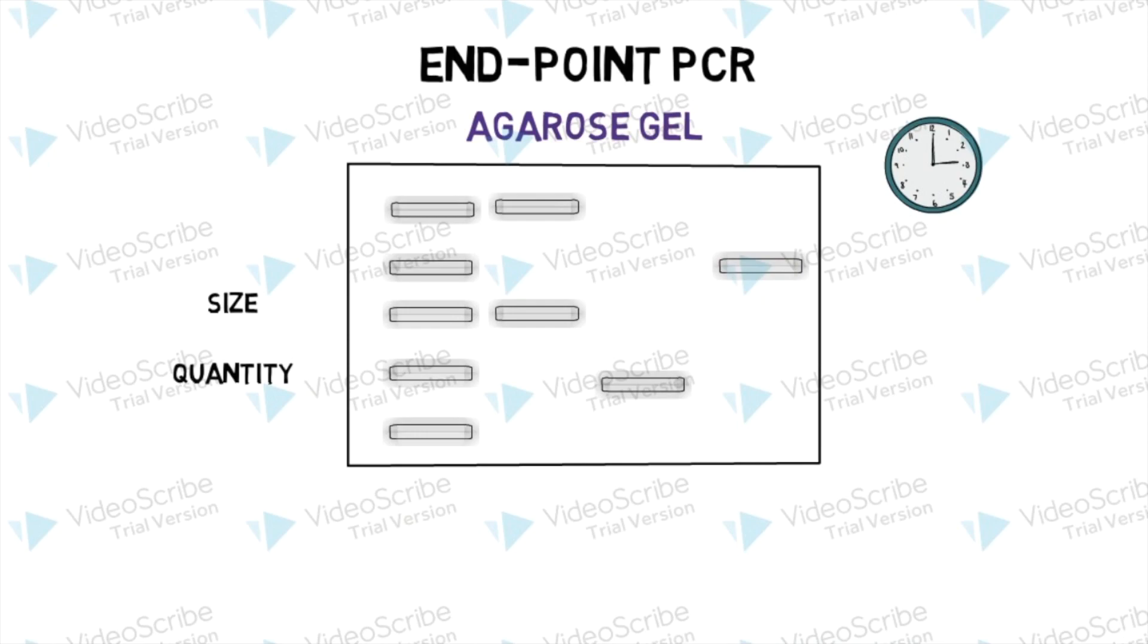Endpoint PCR relies on size discrimination and can be used to estimate relative quantity. One limitation is that agarose gel resolution is poor and only enables discriminations between about tenfold variances.